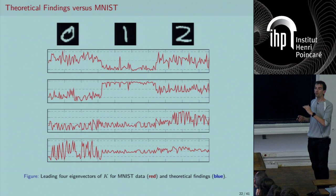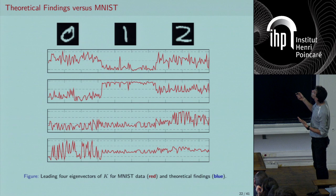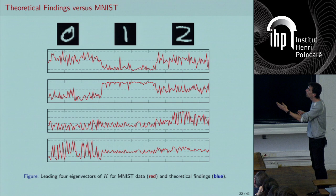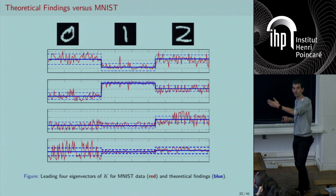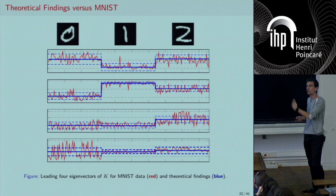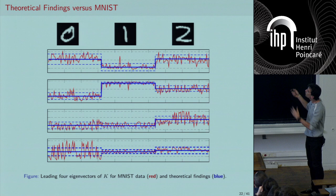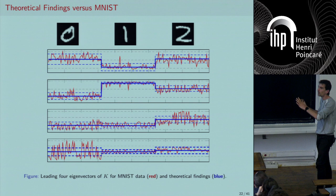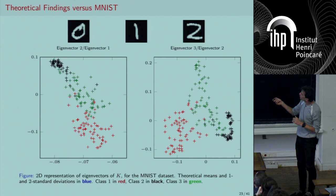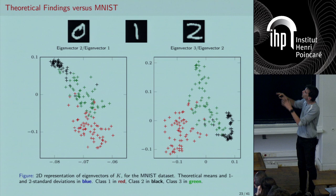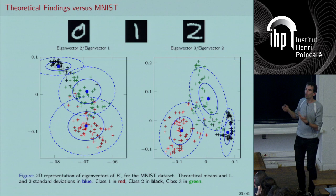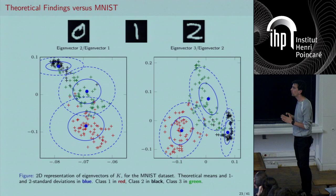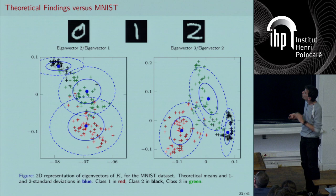Looking at eigenvectors, the first four eigenvectors of MNIST spectral clustering show noisy plateaus — in red for real data, in blue for the theoretical prediction. In two dimensions — eigenvector 1 vs. 2, or 2 vs. 3 — the cloud of points from real data matches the theory closely, which is initially surprising but, as we'll see, no longer so.